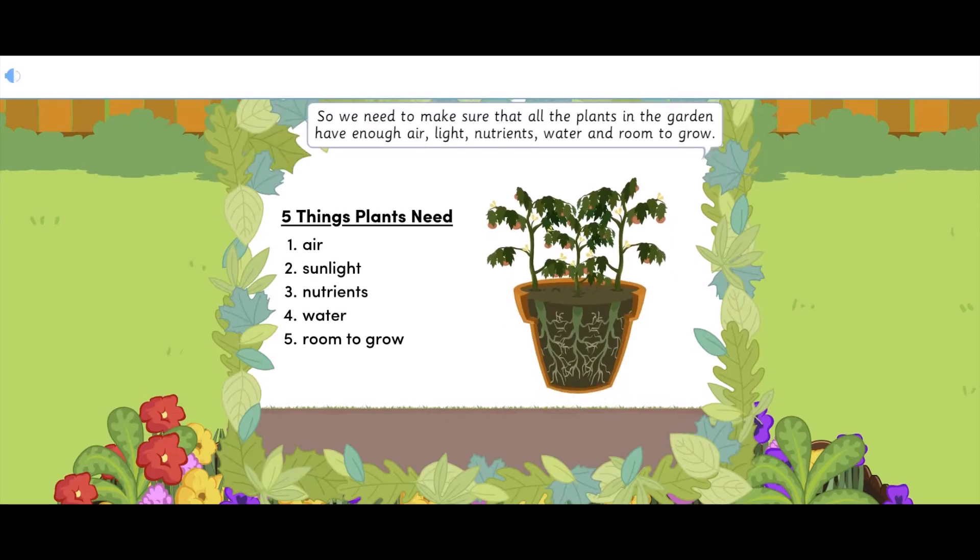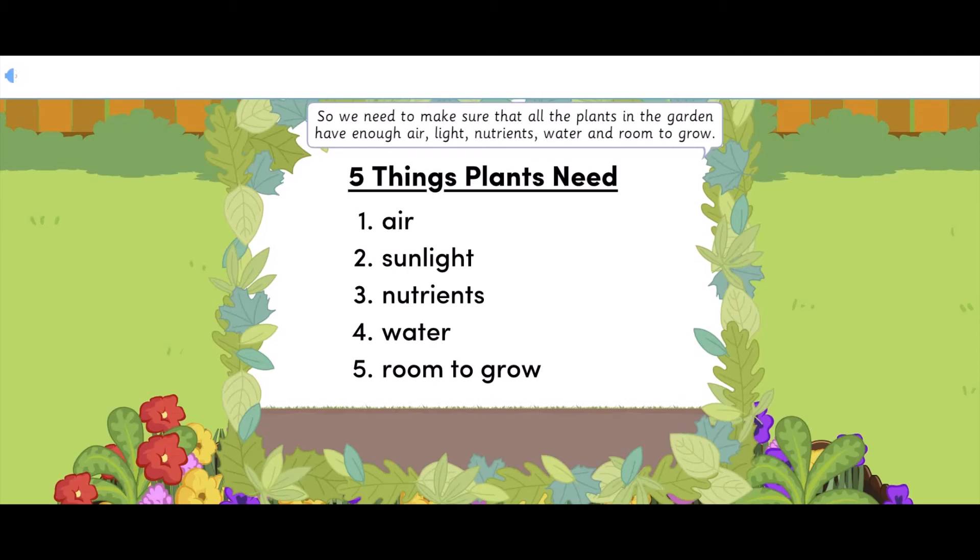So, we need to make sure that all the plants in the garden have enough air, light, nutrients, water and room to grow.